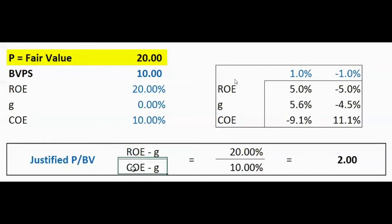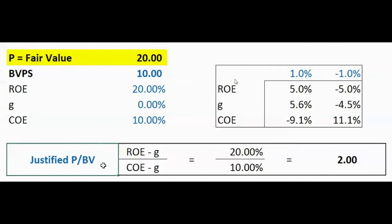You need three inputs: the growth rate, the ROE, and the cost of equity. Dividing gives you the multiple itself. But the multiple alone is not the end result — you need it to calculate the fair value for the bank. With the book value per share, you can calculate the fair value based on the bank's fundamentals: growth rate, ROE, and cost of equity.